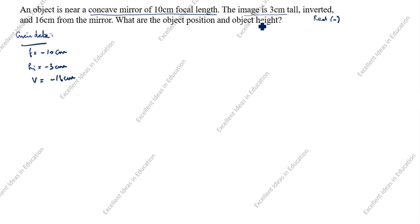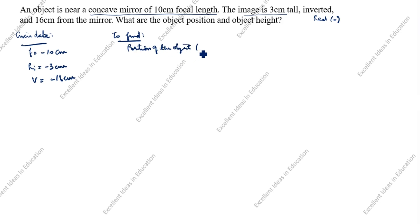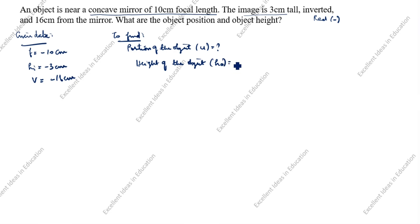What we need to find: the object position and object height. To find position of the object, we need u. To find height of the object, we need ho. Solution follows.